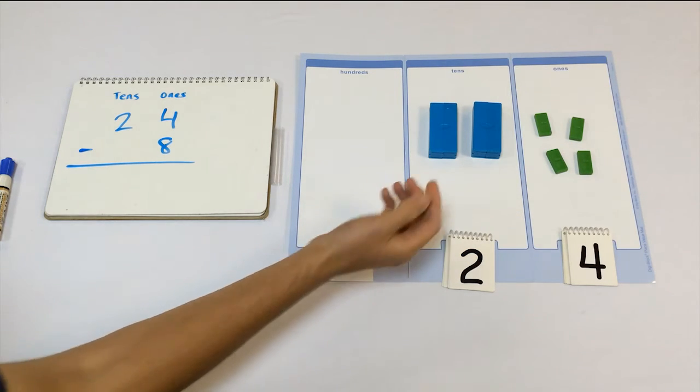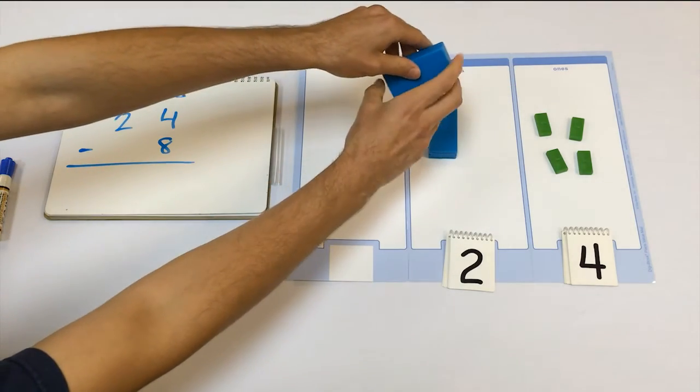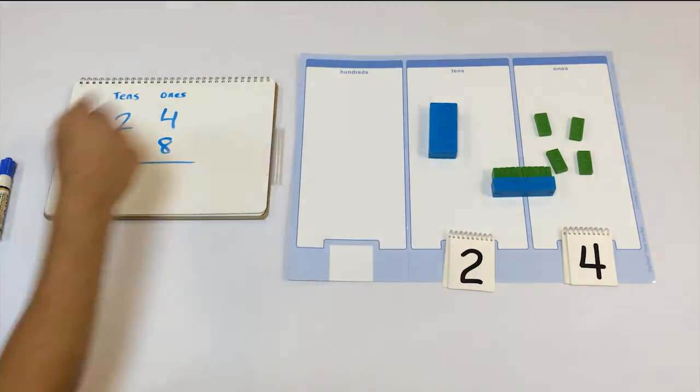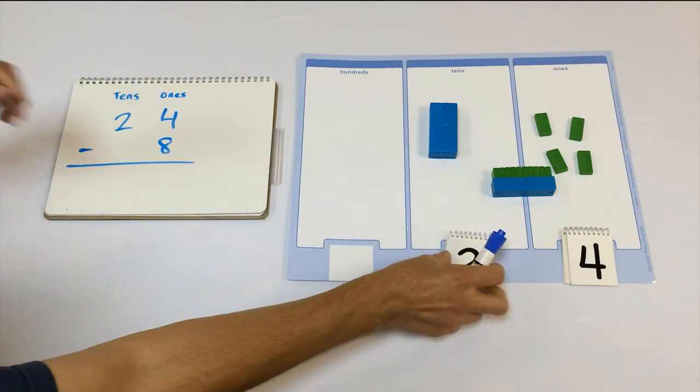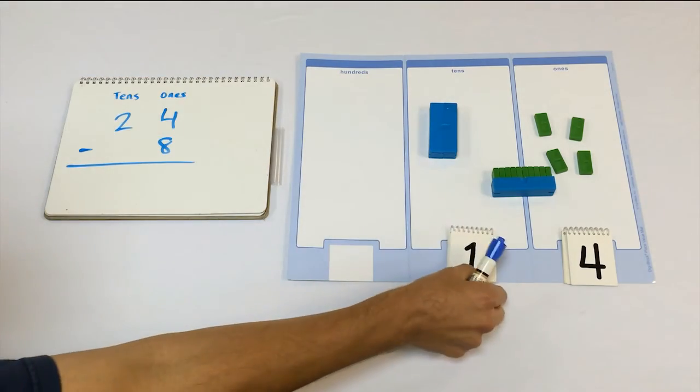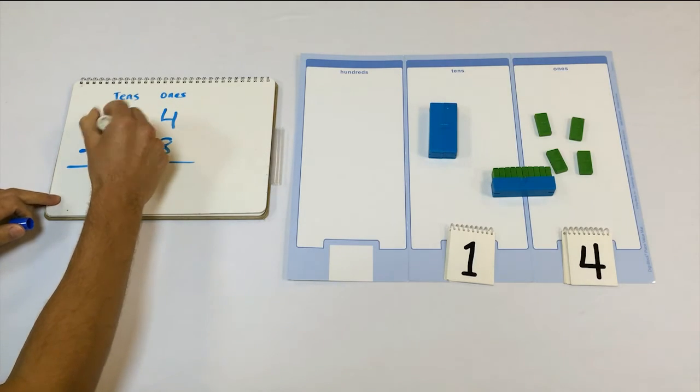So, what do we do? We open a 10 to get more 1s. So, we break open that 10. Now, how many 10s do we have? We have just one 10. This step is the crossing out of the 2, writing a 1 here.